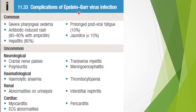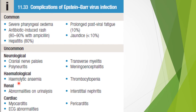The complications of Epstein-Barr virus infection are numerous. Common ones include severe pharyngeal edema, which may lead to dysphagia; antibiotic-induced rash in 80 to 90% of patients given ampicillin; hepatitis in 80%; prolonged post-viral fatigue or chronic fatigue syndrome in 10%; and jaundice in less than 10%. Uncommon complications may be neurological, hematological, renal, or cardiac.